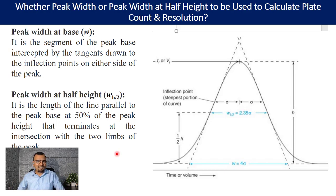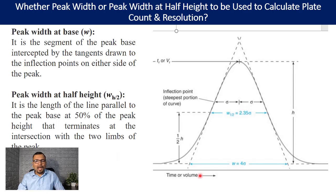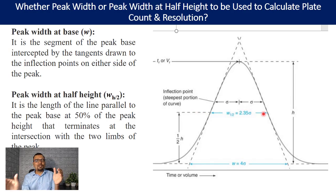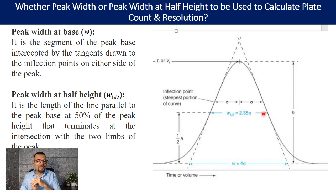What needs to be understood is: first, integrate the peak appropriately at the base and understand the entire height h of this peak from the baseline. Once you understand h, calculate 50% of that — h/2, the half height. From the baseline, calculate up to h/2, then understand what is the distance between the two limbs of the peak at half height. That distance is the peak width at half height.